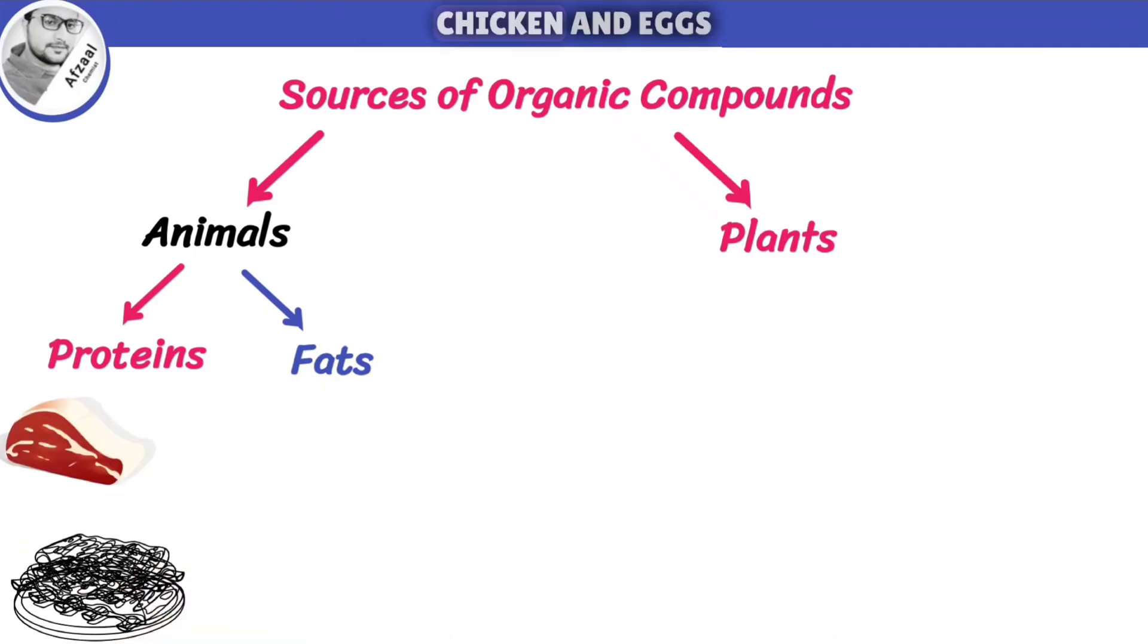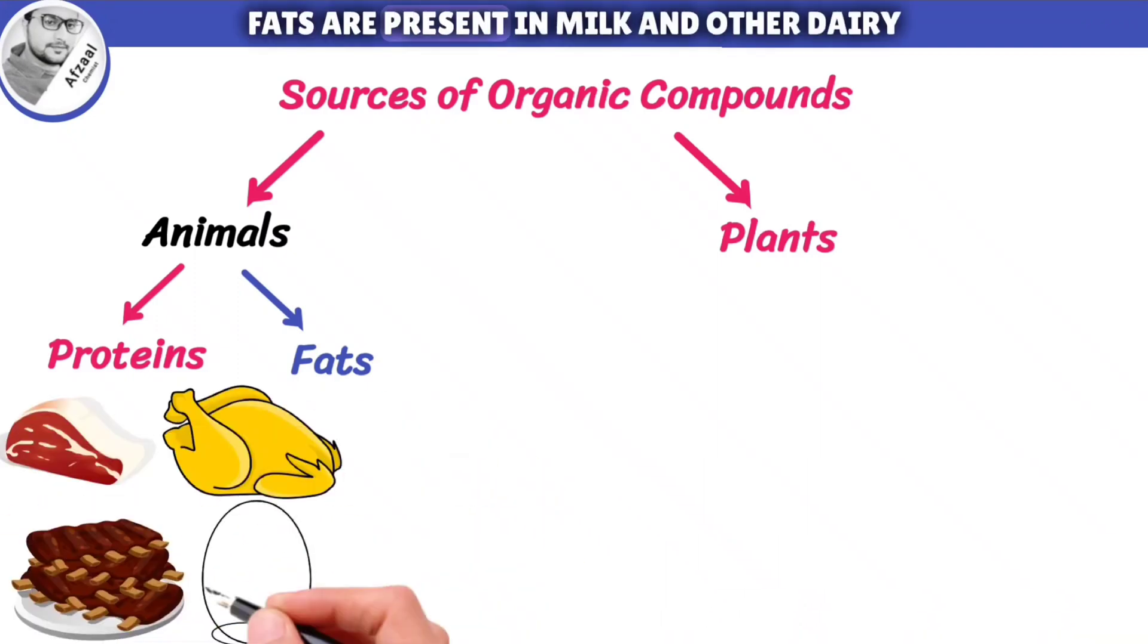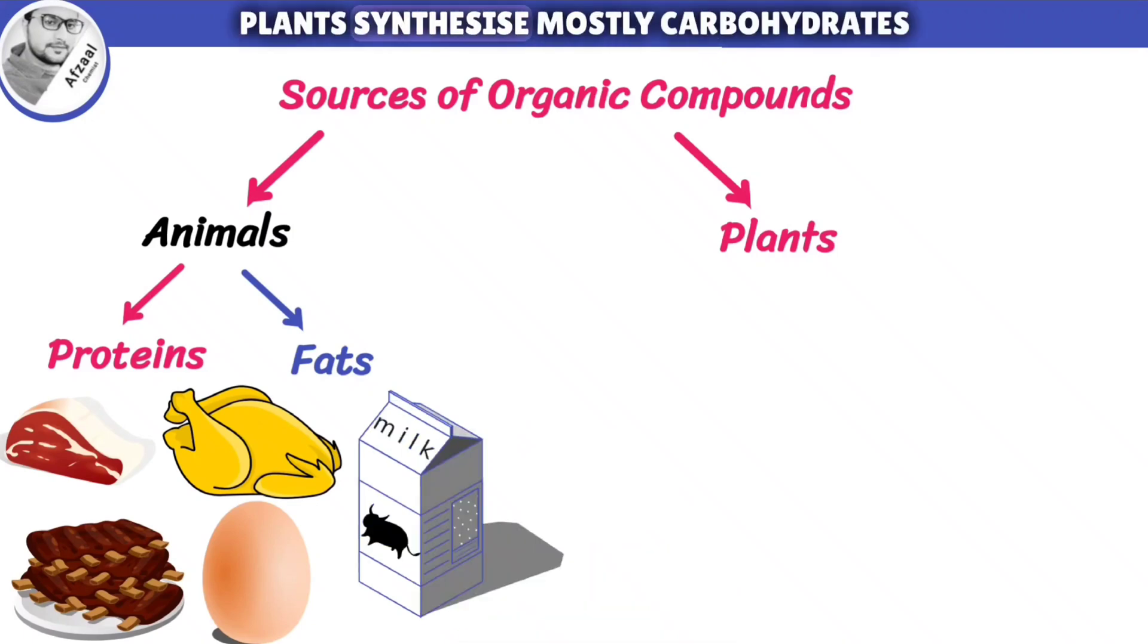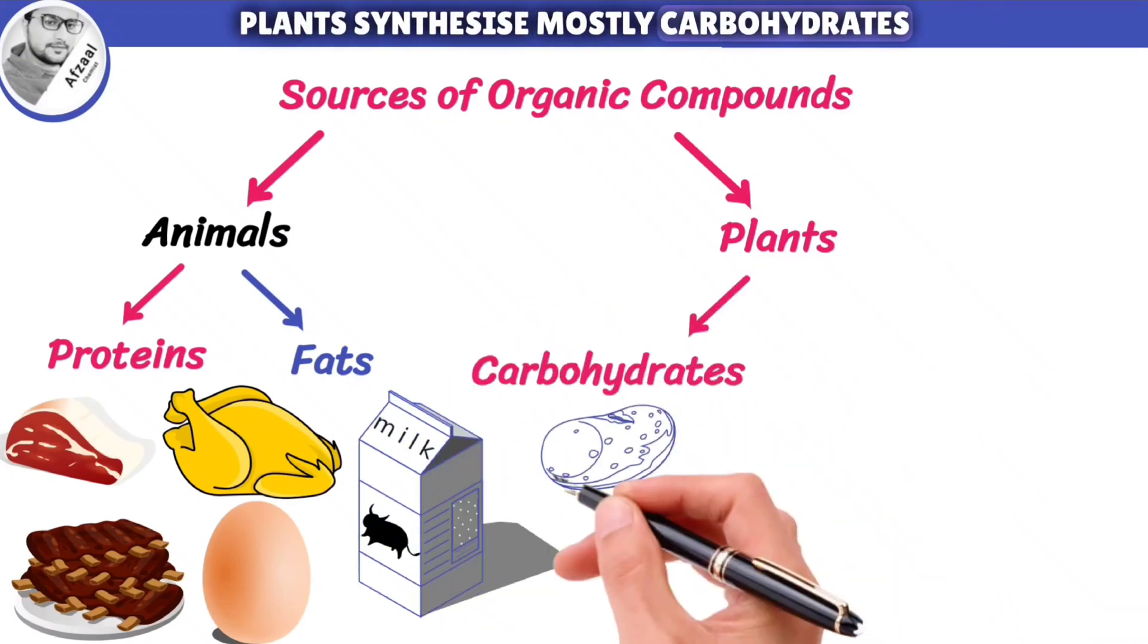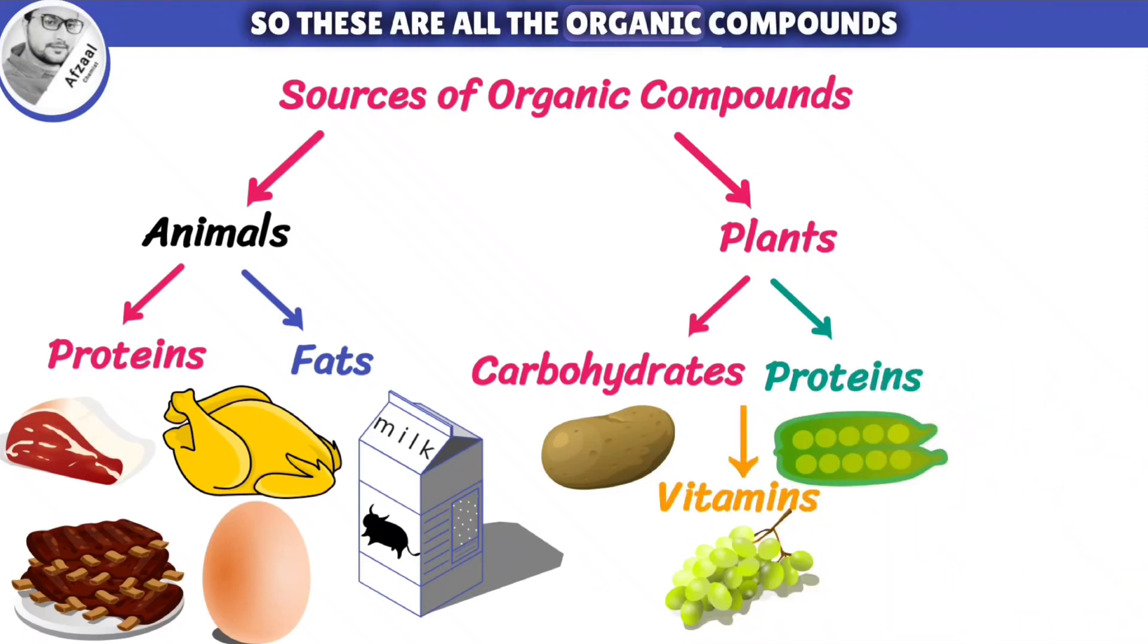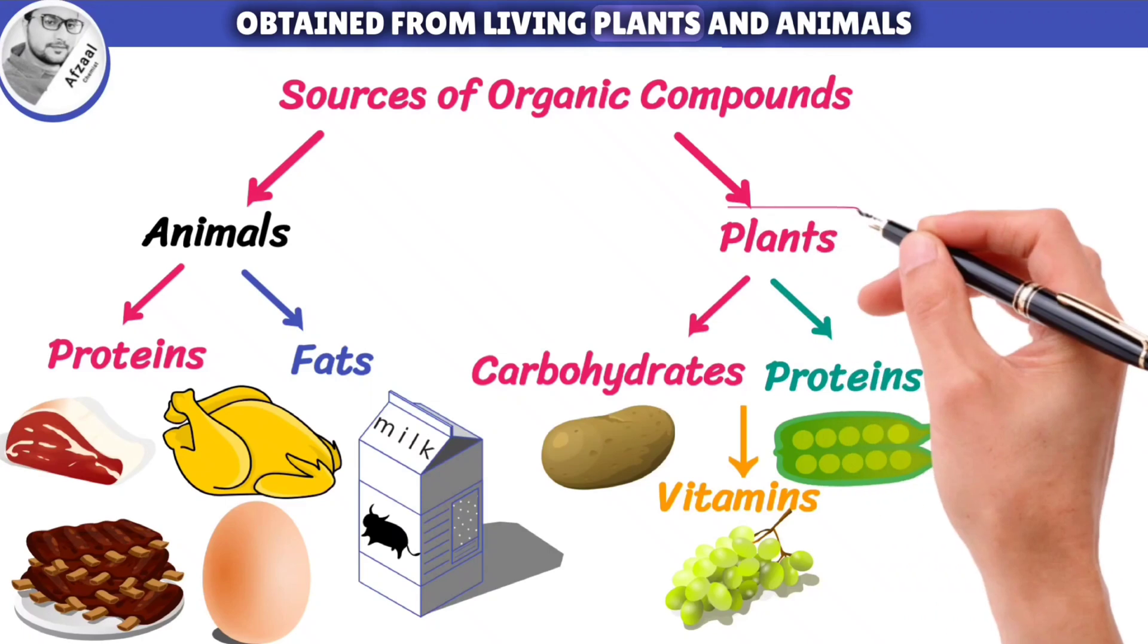Proteins are meat, mutton, chicken and eggs. Fats are present in milk and other dairy products. On the other hand, plants synthesize mostly carbohydrates, proteins and vitamins. So these are all the organic compounds obtained from living plants and animals.